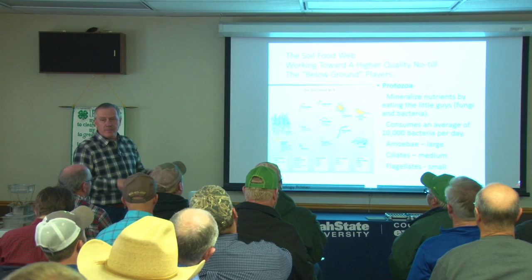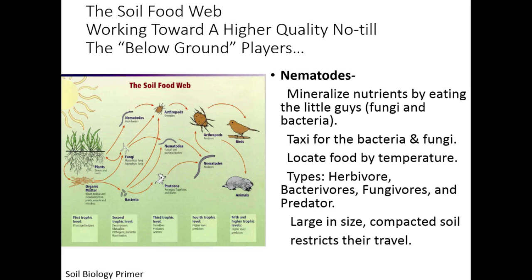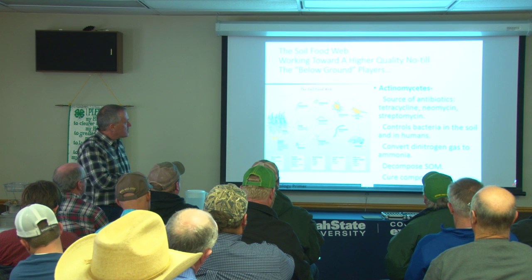Now comes along the protozoa — that's a big guy. He's going to consume the bacteria and the fungi, and excrete the excess nutrient in a plant-available form. That's mineralization — converting from organic to inorganic. Nematodes are also big guys; they eat fungi and bacteria as well. So protozoa and nematodes mineralize the nutrient out of bacteria and fungi. The actinomycetes are our sources of antibiotics — tetracycline, neomycin, streptomycin — they all come out of this portion of the soil food web, and they control bacteria in the soil.